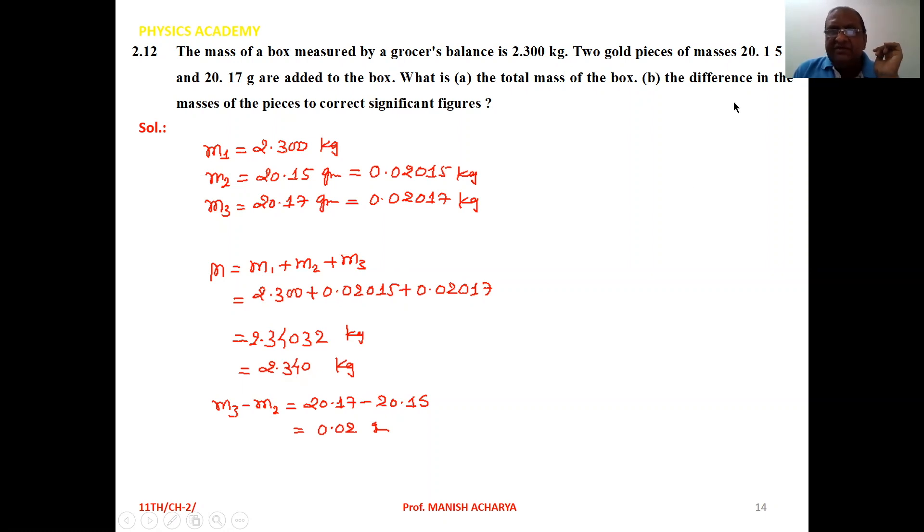Then the second question: the difference in the masses of the pieces to correct significant figures. The pieces have mass m2 and m3. So m3 - m2, which is 20.17 - 20.15.